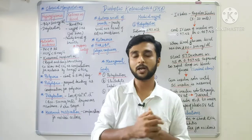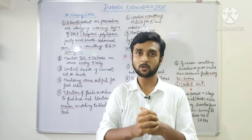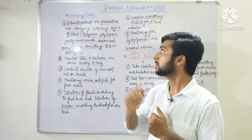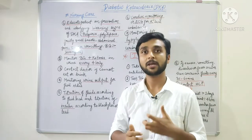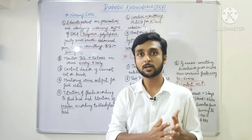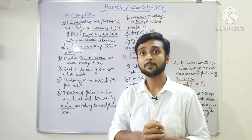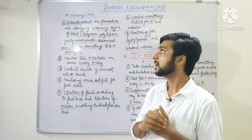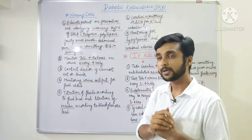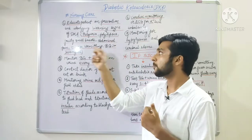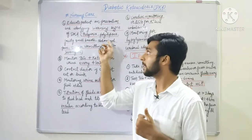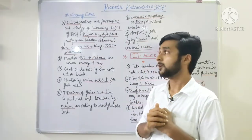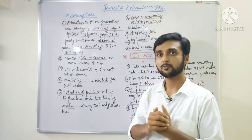Now we will see nursing care related to diabetic ketoacidosis. First, educate the patient on prevention — how we can prevent DKA: never miss the insulin dose, take food properly. The patient should know that severe abdominal pain, nausea and vomiting can occur because of accumulation of excessive acids in the body, and if blood glucose level is more than 300 mg/dL, they must come to the hospital.